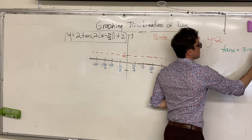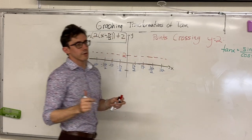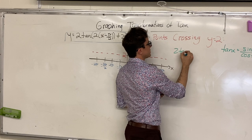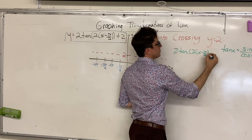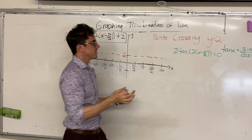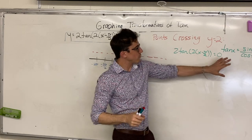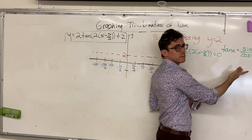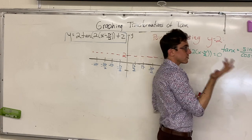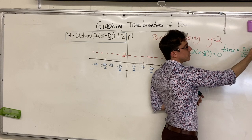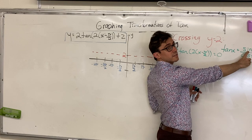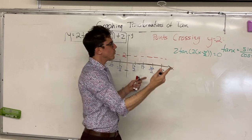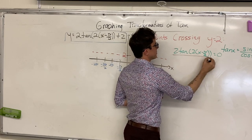I'll remind you that tan of x is defined as the quotient of sin of x over cos of x. So if you want to look for the points where this first term is equal to 0 — that is to say when 2 tan of 2 bracket x minus π over 2 is equal to 0 — we need only to look at when sin of this thing is equal to 0. Because whenever we have a fraction set equal to 0, all we need is the numerator to be equal to 0, and the numerator for the tan function is simply sin.